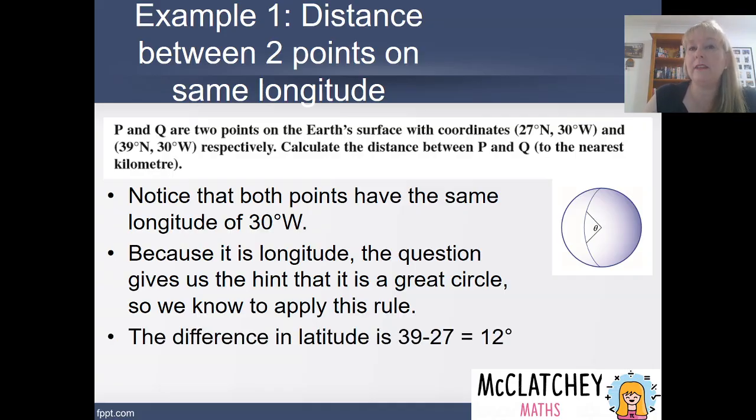Firstly, we need to calculate the difference in the latitude. One point is point Q, it's 39 degrees north. The other point, point P, is at 27 degrees. So they've got this difference of 12 degrees. And we know they've got the same longitude, so we're not going to do anything with that 30 degrees. That stays as our clue as to which formula to use, but we don't actually use that number at all.